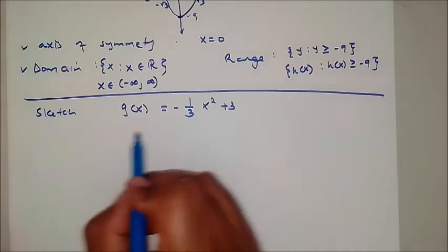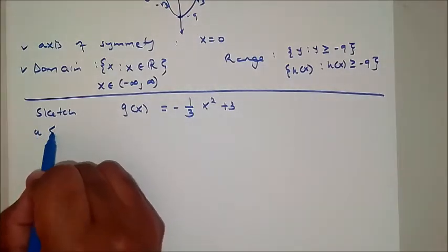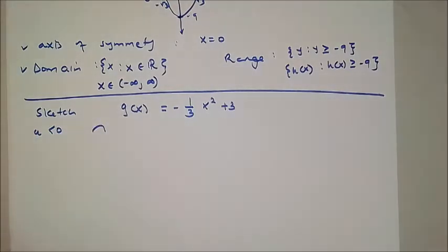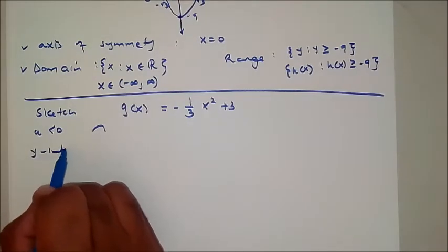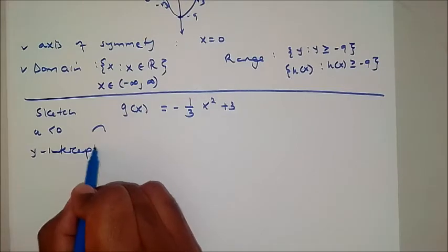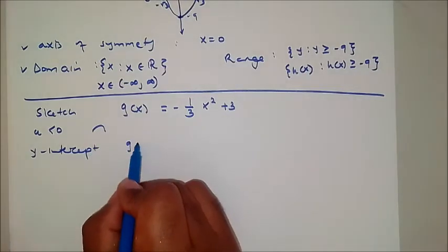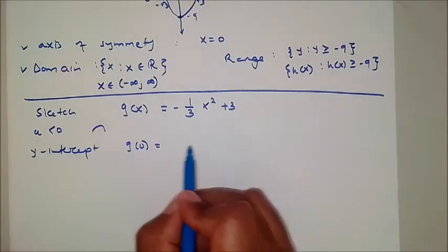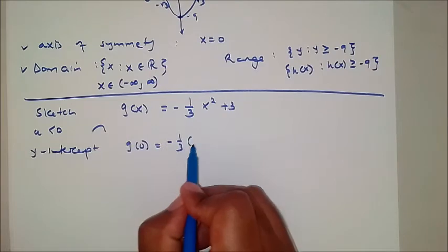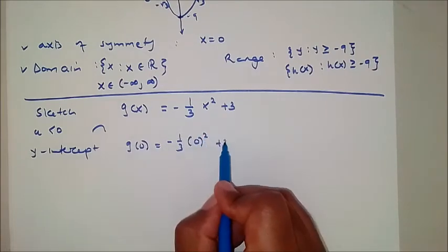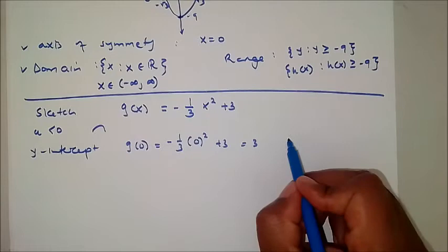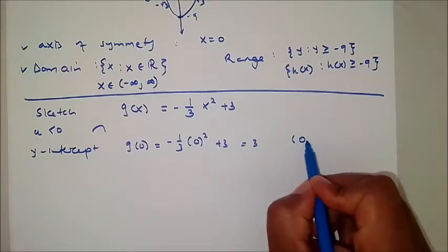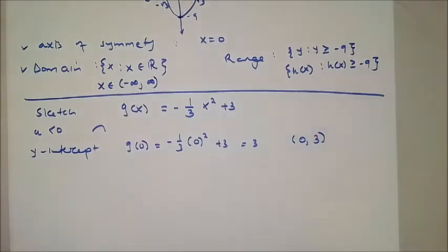Same applies here. Our a is less than 0, so our graph must open downward. For the y-intercept, we let x equal to 0: g of 0 equals negative 1 over 3 times 0 squared plus 3. So the y-intercept equals 3, giving us the point (0, 3).